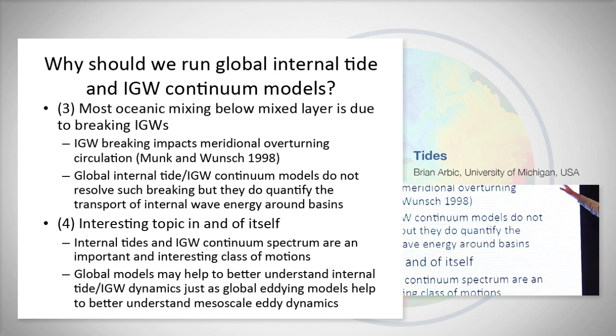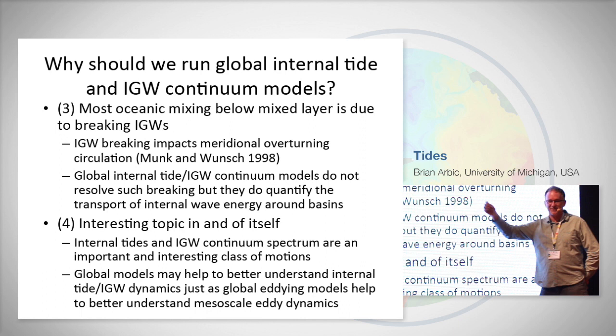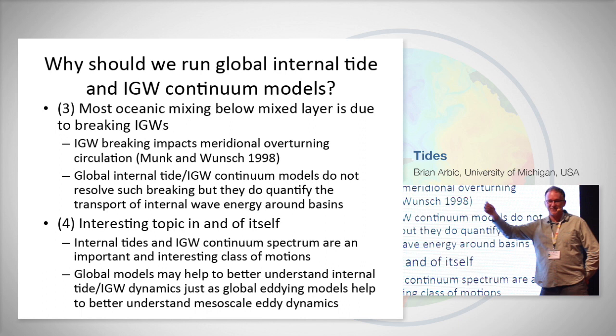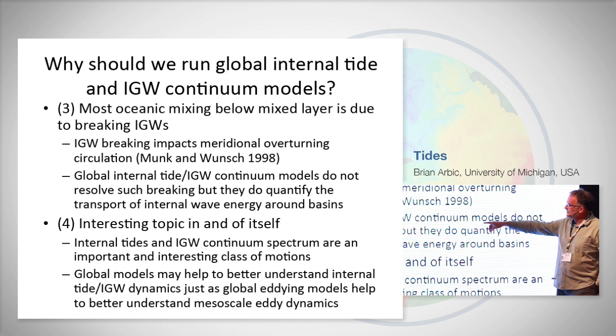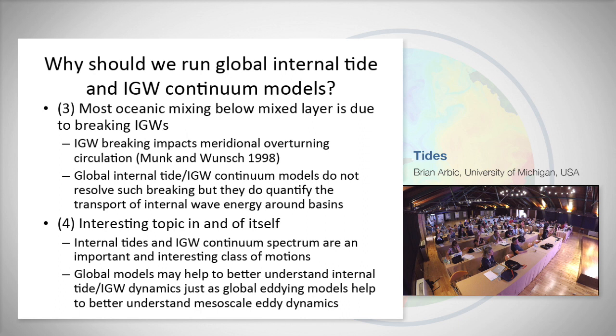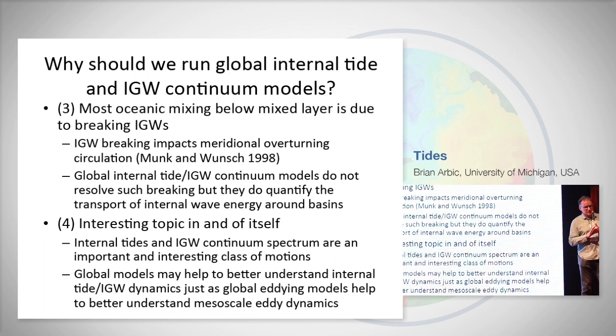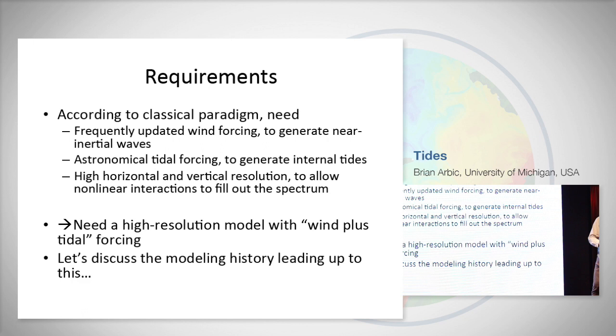Reason three: most oceanic mixing below the mixed layer is due to breaking internal gravity waves, which impacts the meridional overturning circulation. Global models don't resolve breaking, but they do quantify the transport of these waves around basins. Reason four: internal tides and the continuum spectrum are an important and interesting class of motions, and global models might help us understand their dynamics. To have internal gravity wave continuums in global models, you need frequently updated wind forcing, astronomical tidal forcing, and high horizontal and vertical resolution.